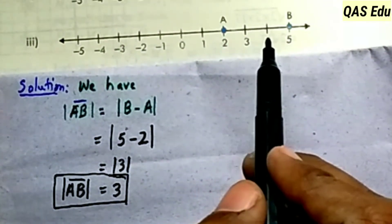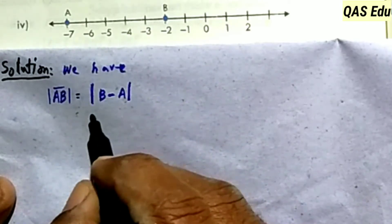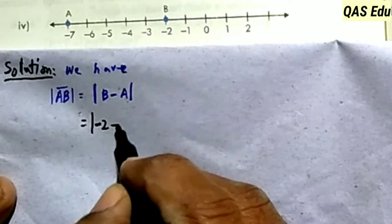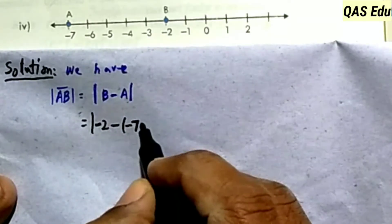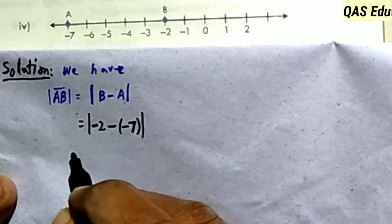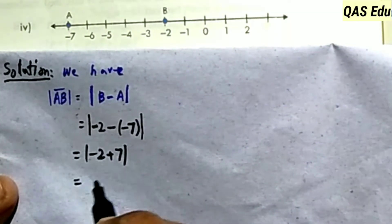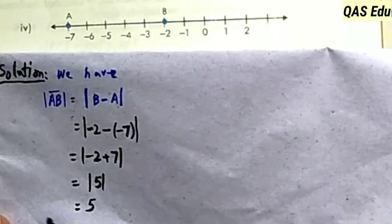Part number 4: the AB length will be |b - a|. B is at minus 2, A is at minus 7. So |(-2) - (-7)| = |-2 + 7| = |5| = 5. The AB length is equal to 5 units.